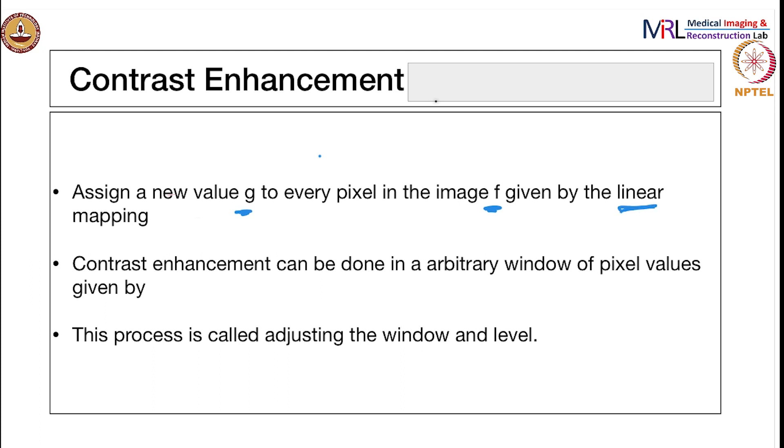It's a linear mapping. Typically what you do is you want to map all the pixel values in f to a range between i_max and i_min. This i_max and i_min is chosen by the user, typically a clinician or radiologist who in his experience knows the best i_max and i_min.